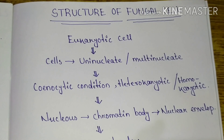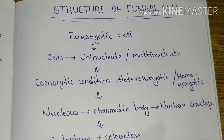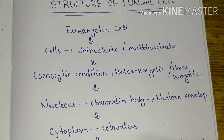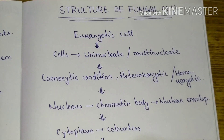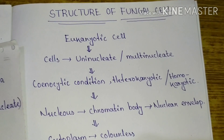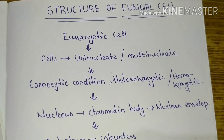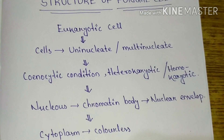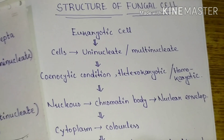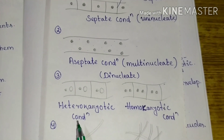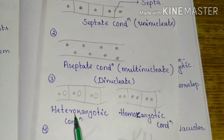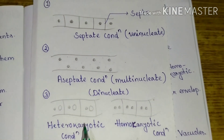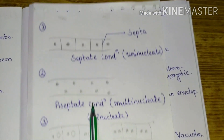In the dinucleate condition, two nuclei are present in a particular cell. This may be of two types: heterokaryotic or homokaryotic. In the heterokaryotic condition, two different types of nuclei are present, while in the homokaryotic condition, two similar types of nuclei are present.